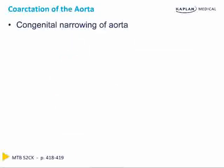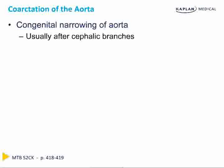The last congenital anomaly we'll discuss is coarctation of the aorta. Coarctation typically occurs near where the ductus arteriosus inserts into the aorta — after the cephalic branches (right brachiocephalic, subclavian, etc.) have branched off. In utero, the developing fetus's brain is therefore not deprived of well-oxygenated blood. Coarctation also tends to present later rather than at birth because the ductus arteriosus closes gradually from the pulmonary artery end toward the aorta, progressively worsening the coarctation over time.